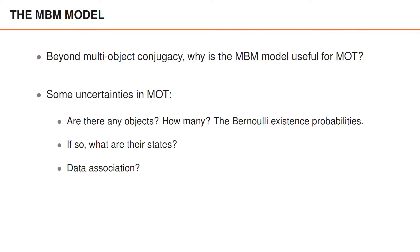The first of these three questions is answered by the Bernoulli existence probabilities. For each Bernoulli, they tell us how certain we are about whether or not there is an object there. From the multiple Bernoullis, we get the object cardinality probability mass function.